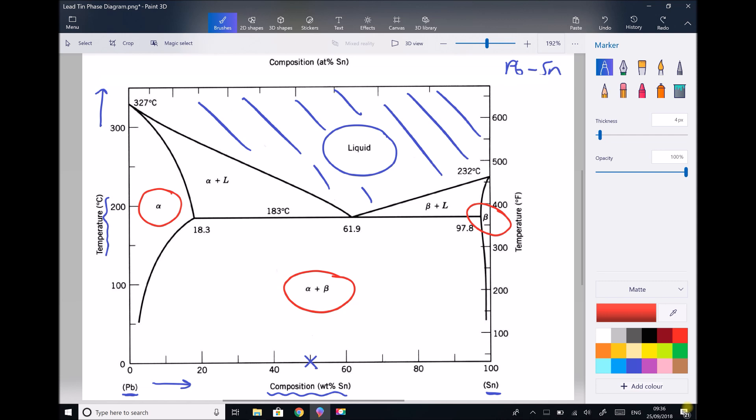First of all the alpha zone on the left hand side is primarily lead. We know that it's primarily lead because on the left hand side our tin contents are very low. This will be lead with a very small amount of tin dissolved within it. But alpha is primarily lead.